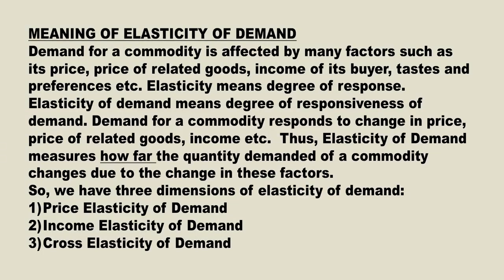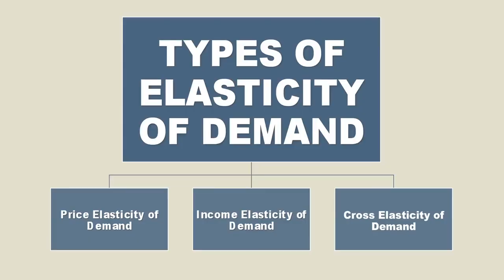From the definition itself, we can find out the three dimensions of elasticity of demand. According to the factors affecting the demand for a commodity, we have three types of elasticity of demand: Price Elasticity of Demand, Income Elasticity of Demand, and Cross Elasticity of Demand.